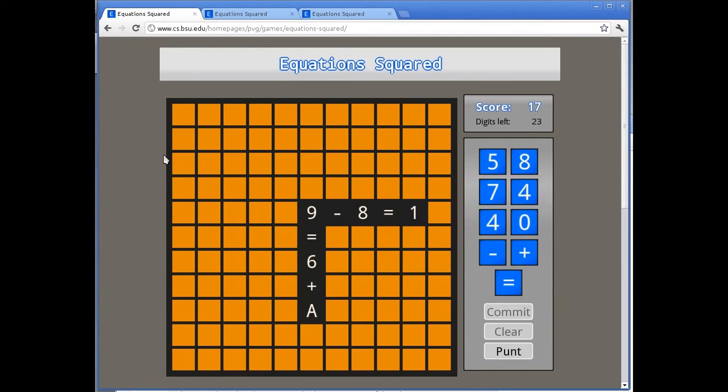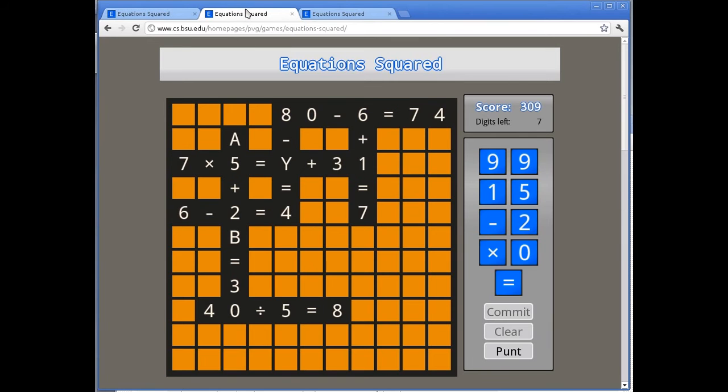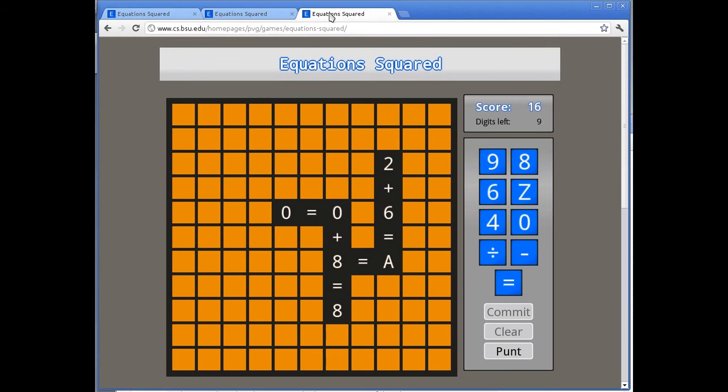Let's take a look at some games that are already in progress. Here's one where I've played some pretty interesting equations. I have 309 points with 7 digits left. That's a pretty good score. If a player gets a score that high, you can be sure that he or she has a pretty good understanding of mathematical structures. Here's another one.